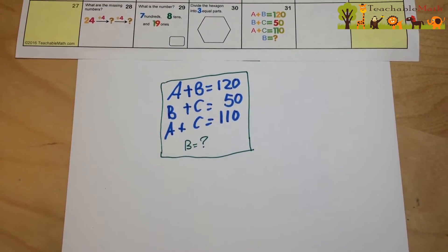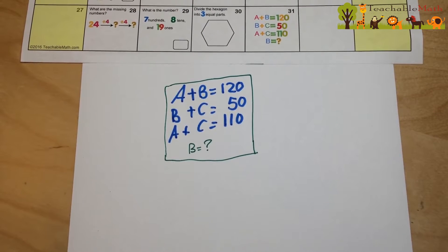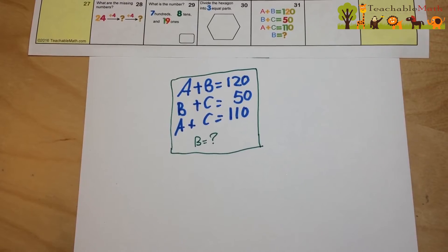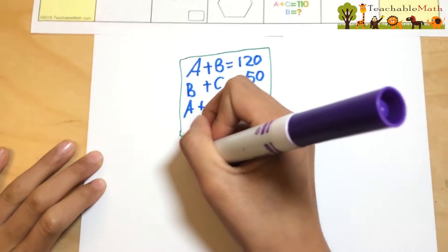A plus B equals 120. B plus C equals 50. A plus C equals 110. What does B equal? So first I reorganize the equations.